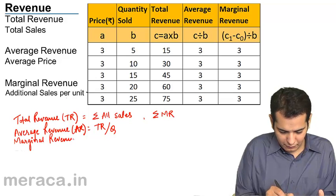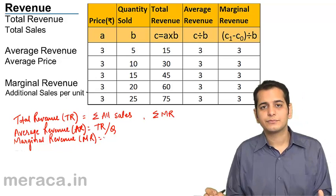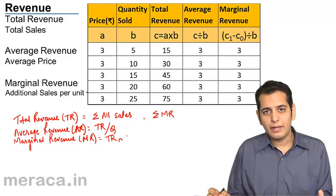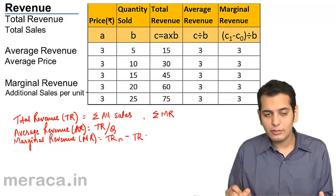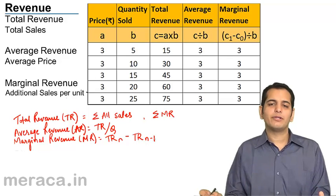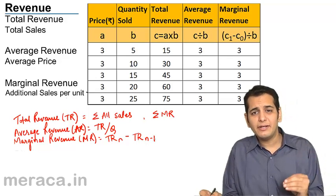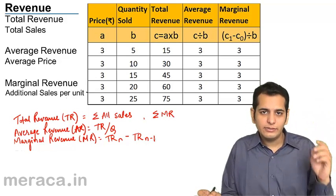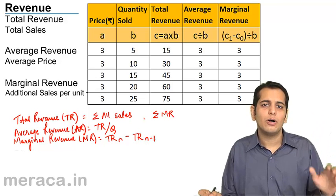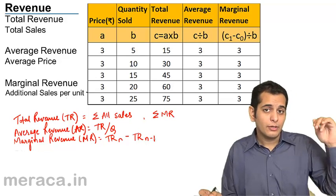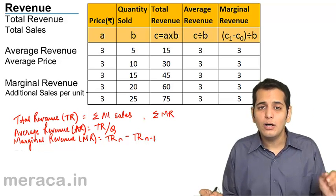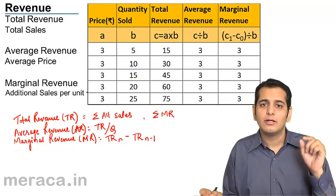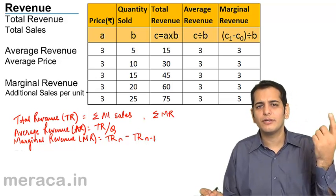And finally you have marginal revenue. Marginal revenue is total revenue from N units minus total revenue from N-1 units — that is the additional revenue that you get from the sale of one extra unit. For example, if you sell 10 units and earn 1000 rupees, and when you sell the 11th unit you earn an additional 150 rupees, then your marginal revenue is 150 rupees.